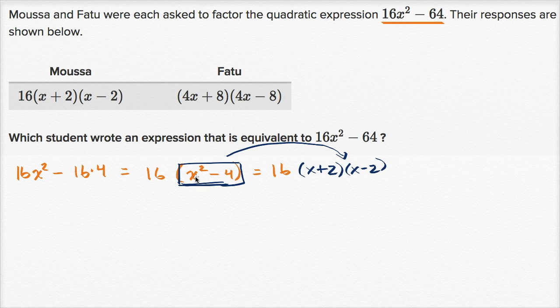But the basic idea, I have a form here of a squared minus b squared, so it's going to have the form of a plus b times a minus b. In this case, it's x squared minus two squared, so it's going to be x plus two times x minus two.